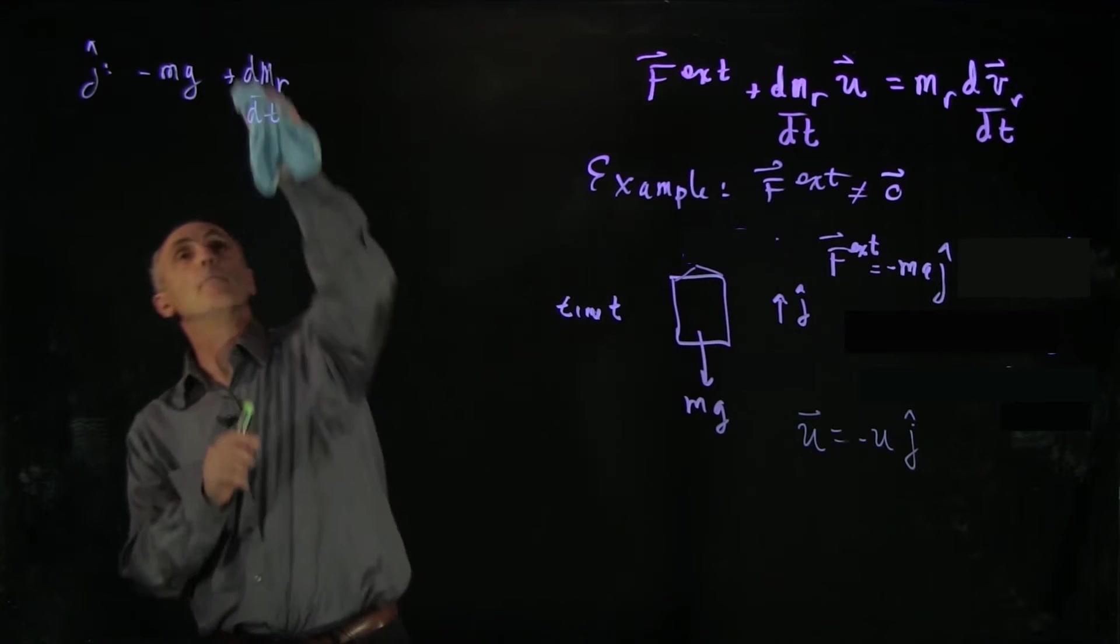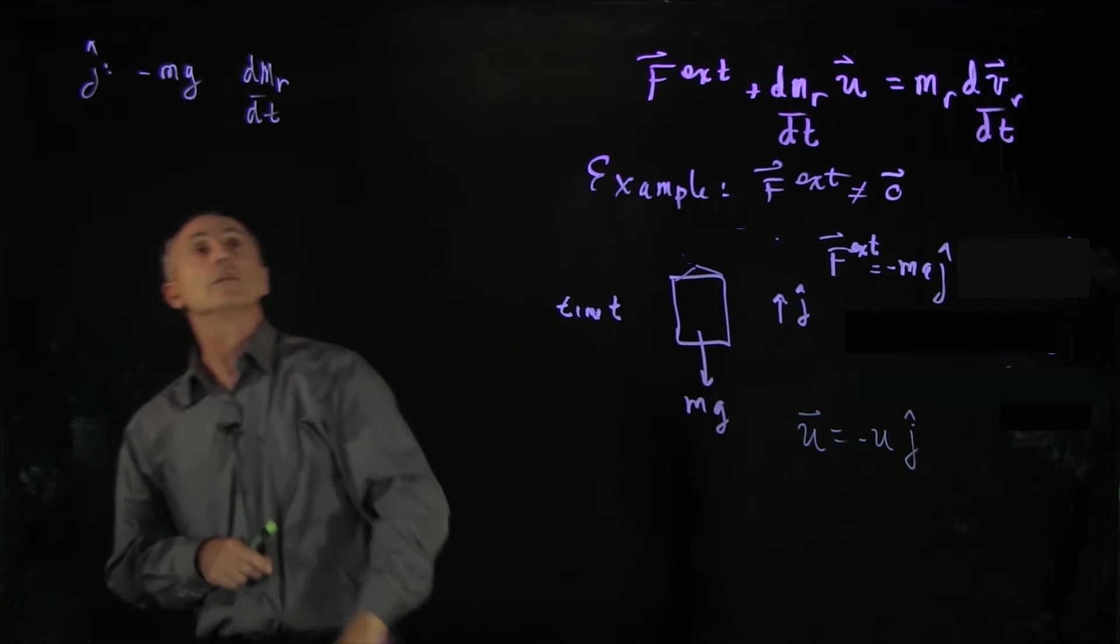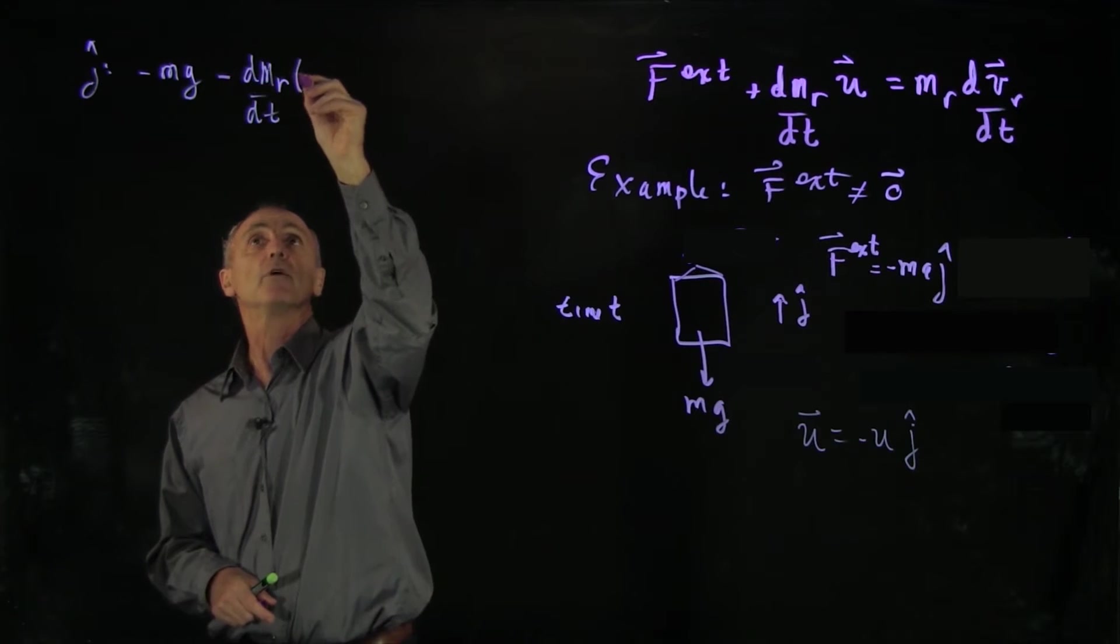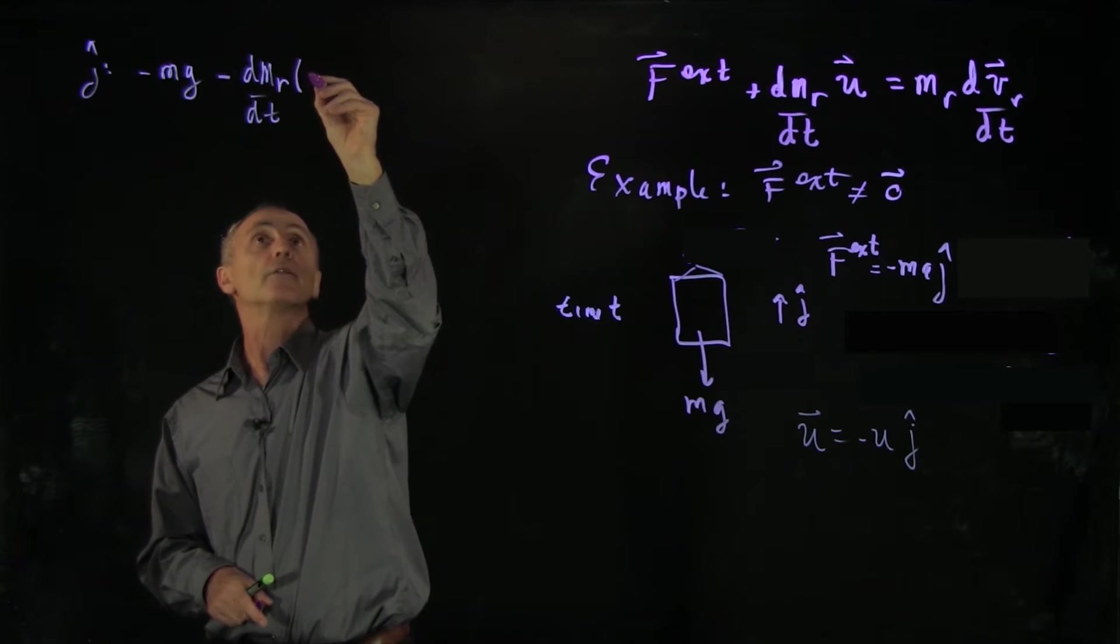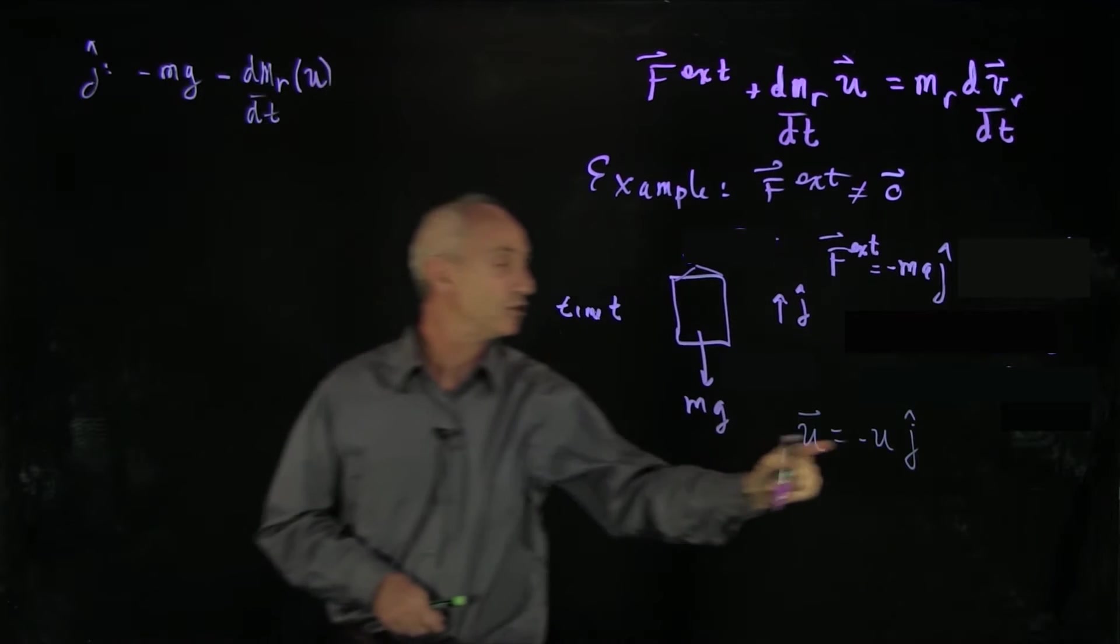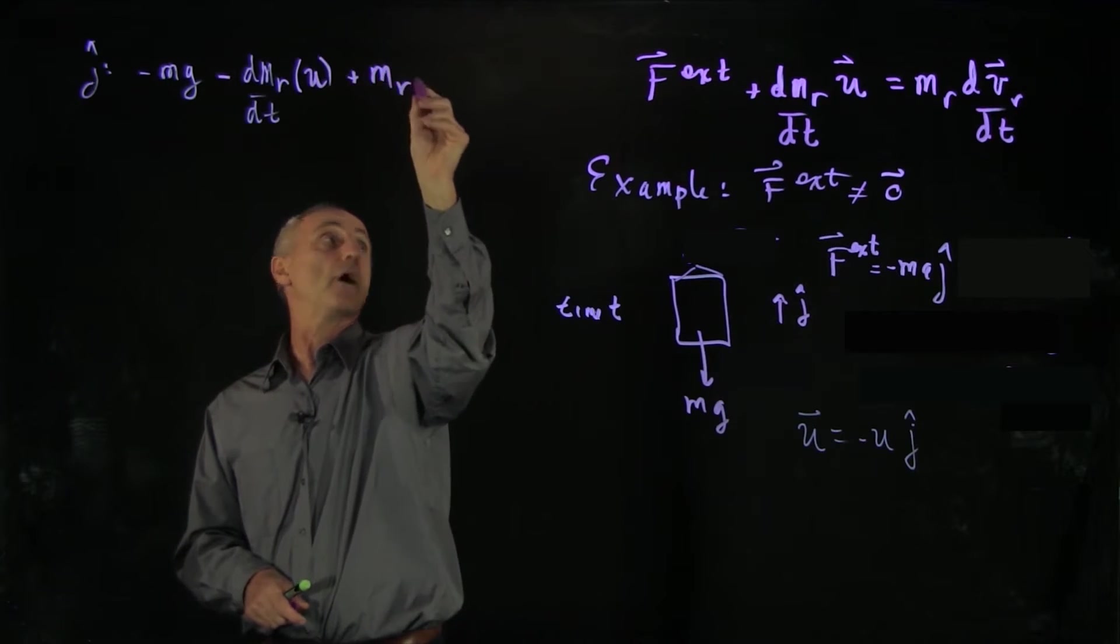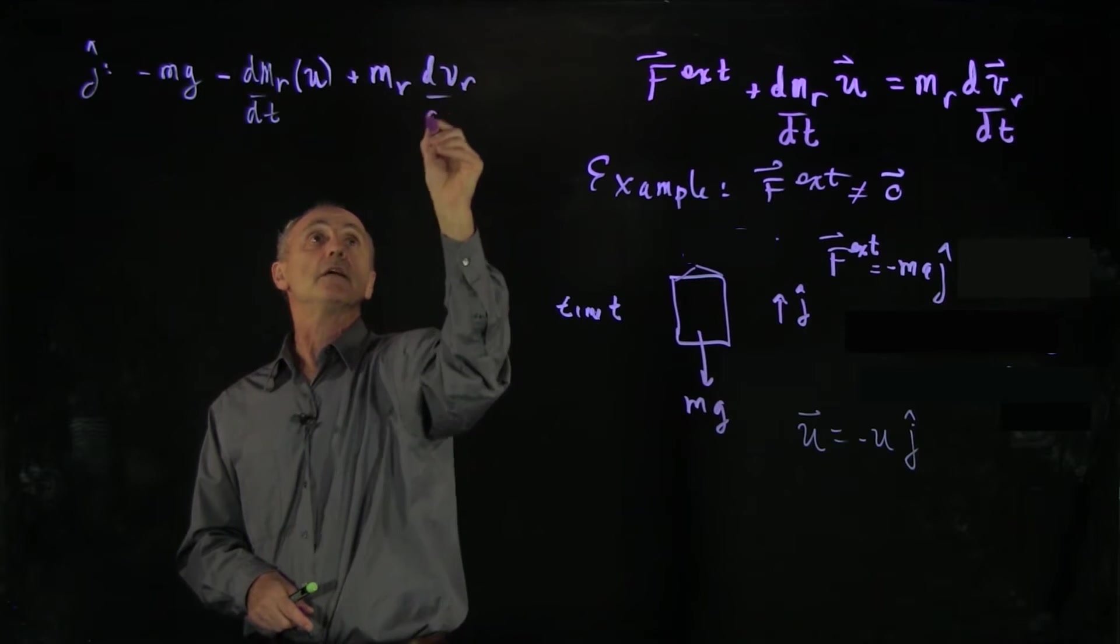we get minus mg. We have the rate that the rocket mass is changing. And remember, m dr dt is going to be negative, so there's a minus. And over here we have another, this is u because u is minus u. And finally, we have m rocket dv r dt.